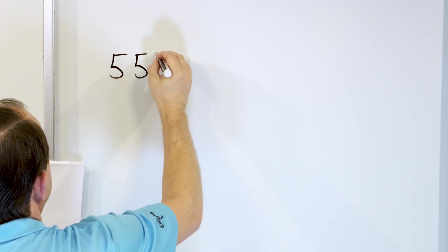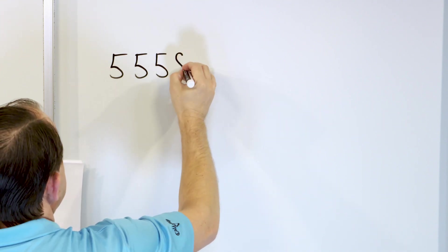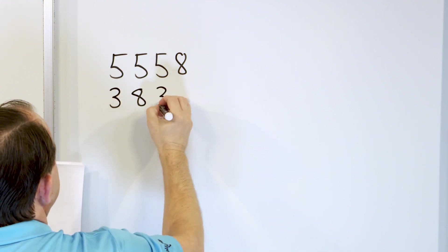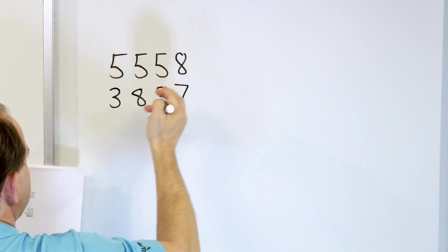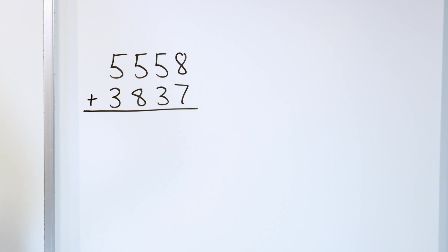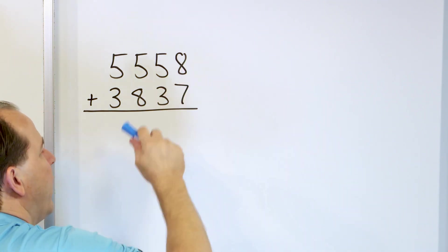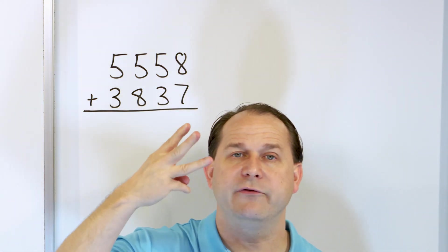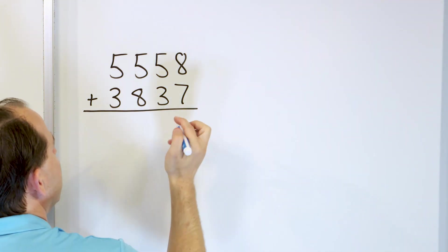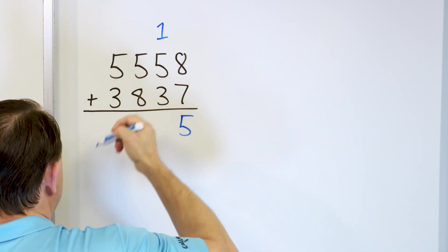Let's say we have 5,558. And then we have 3,837. Notice how everything is lined up. Nothing is kind of off. And that helps us greatly. Now let's take a look at 8. Let's go up 7 more. 9, 10, 11, 12, 13, 14, 15. So that's 15. So we have to write that as a 5 down here and we'll carry the 1.